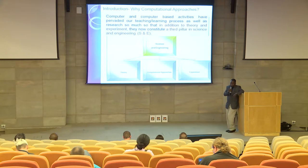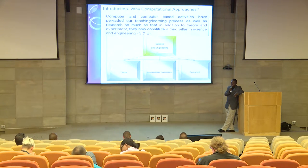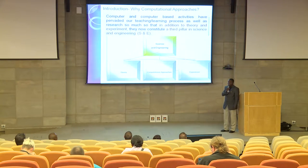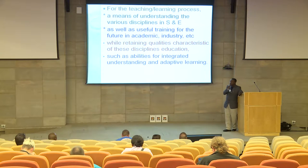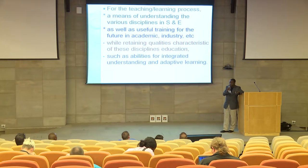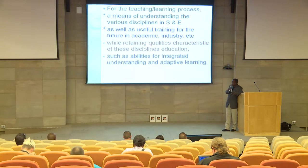Today, it's no longer news that computers and computer-based activities have pervaded our teaching, learning, and research processes. In addition to the traditional theory and experiment — where you do theory in the classroom then test it in the lab — we now have a third leg: computational physics. The 21st century scientist and engineer cannot function effectively without some level of computational science and engineering. For the teaching and learning process, we see computational physics as a means of understanding the various disciplines in science and engineering at the college and undergraduate level.